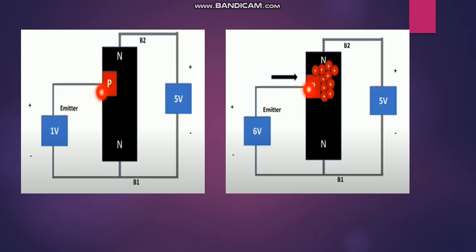A small leakage current flows through the PN junction, which acts like a PN junction diode. The other side is in reverse biased condition. The emitter side is at zero volts, which is the ground, because it is at low potential.